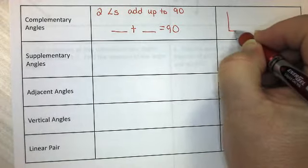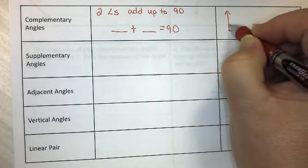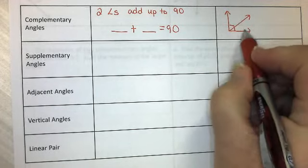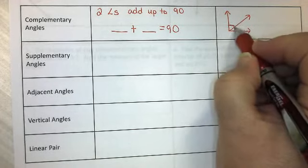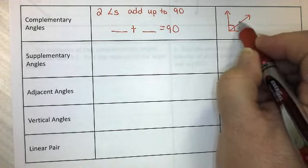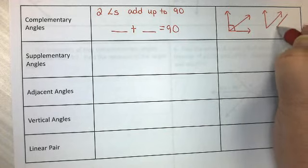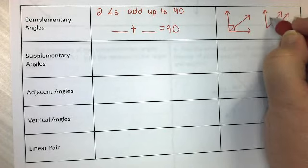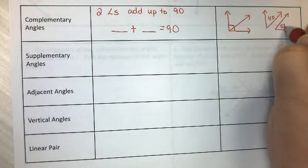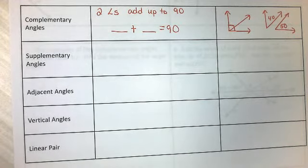So think angle plus angle equals 90. And what those might look like, they might look something like this, where together, notice there's the box for perpendicular, together they add up to 90, or they could be separate from each other. Maybe this one's 40 and this one's 50, and together they add up to 90.